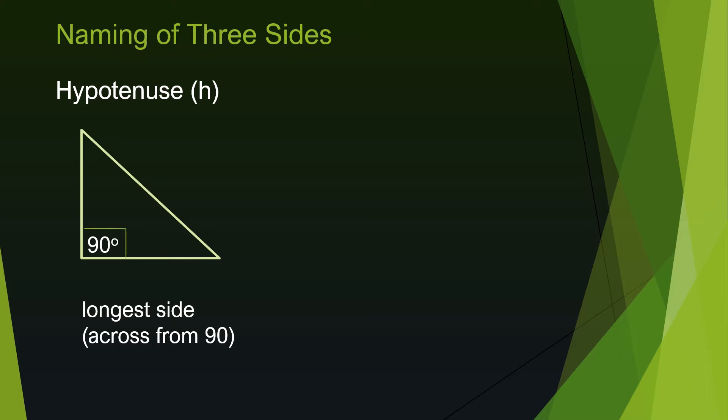I'm denoting the hypotenuse by lowercase h, and it is across from the 90 degree angle. Now to learn about the other two sides, we first have to assign an angle in a problem. An angle could be given or you may be asked to find one, so let's call that the angle of interest.